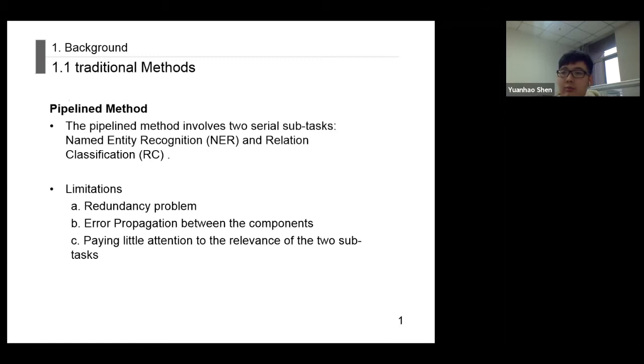First, I would like to introduce the background of our research. Supervised extraction of entity and relation usually uses the pipeline or joint learning approach. The pipeline approach treats the extraction task as two series of tasks: the named entity recognition task and the relation classification task. The pipeline method usually encounters error propagation, redundancy problems, and pays little attention to the relevance of the two sub-tasks.